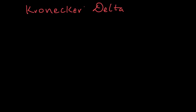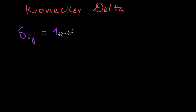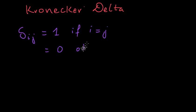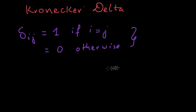Hello guys, welcome to another video in summation notation. In this video we'll be looking at the Kronecker Delta. The Kronecker Delta is this delta symbol here, with indices i and j, and this value is 1 if i equals j and 0 otherwise. We'll find out why we need this Delta in a moment.